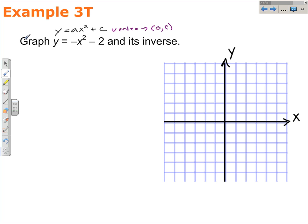In example 3T, we have to graph the function y equals the opposite of x squared minus two and its inverse. It's a pretty easy process if you know how to graph a parabola. This is a parabola because it's in the form y equals ax squared plus c. What makes it a parabola is the fact that it's a quadratic. It has an exponent of two.